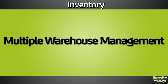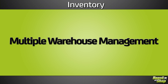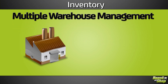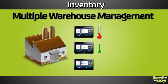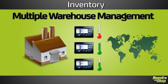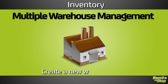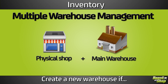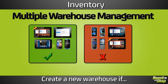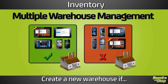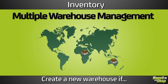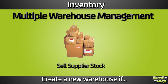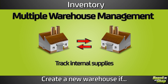The first very important feature is multiple warehouse management. Each warehouse contains its own products, stock levels, and shelf locations. For example, you'll create a new warehouse if you own a physical shop and a main warehouse, you want to keep track of broken or unsellable products, you have several warehouses around the world and want to ship from different locations, you want to sell supplier stocks, or you want to keep track of internal supplies.